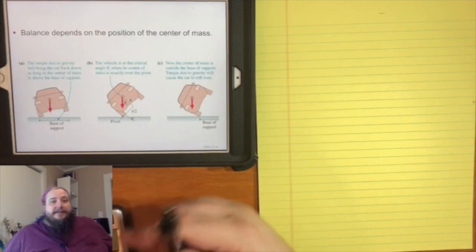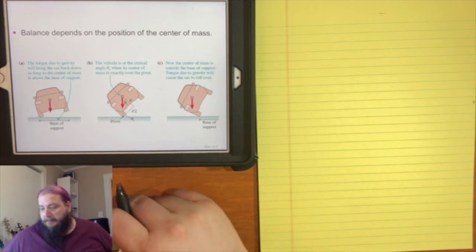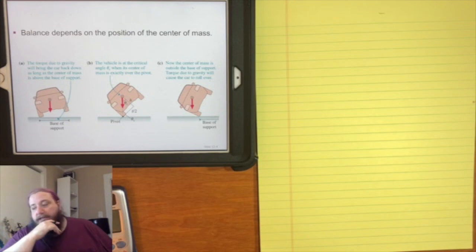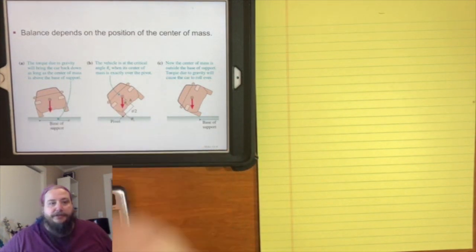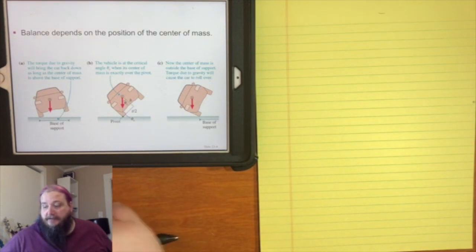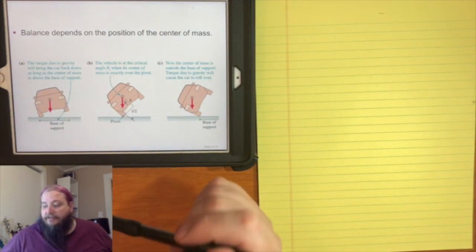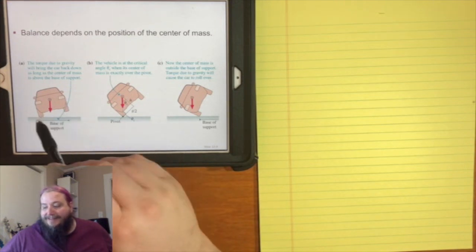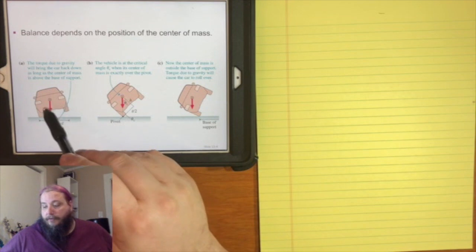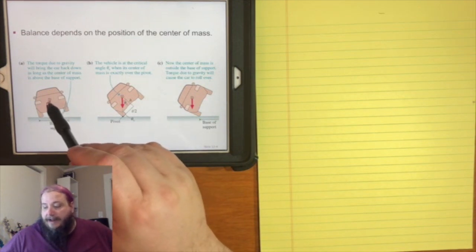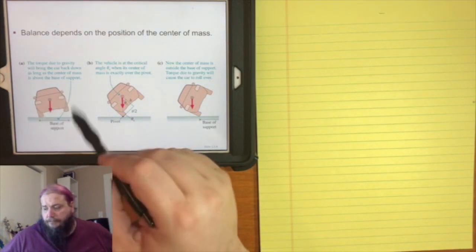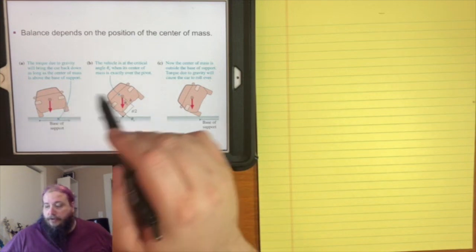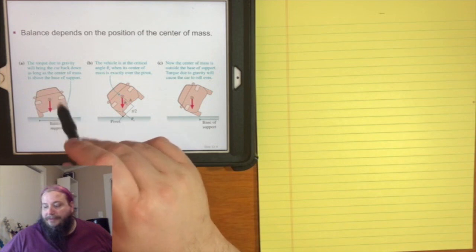Closely related to equilibrium is the idea of balance. Balance is characterized by the relationship between an object's center of mass and what they call the base of support — the widest spread of support for that object. As long as the center of mass is between the extremes of the base of support, the object will balance and be stable.